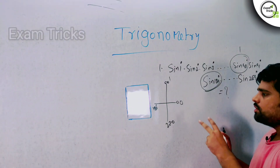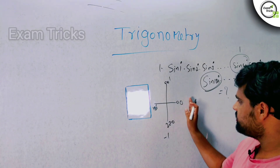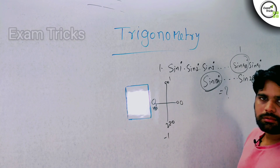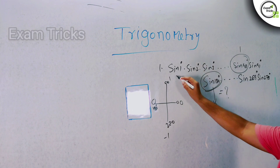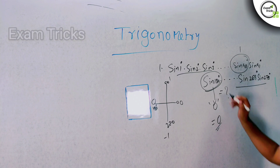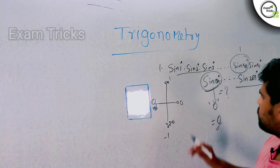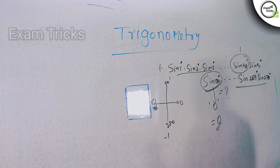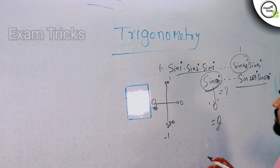So the answer is 0. You can observe these questions in 1-2 seconds once you learn to spot the hidden details in the problem.